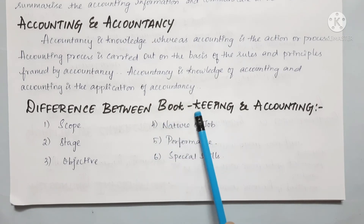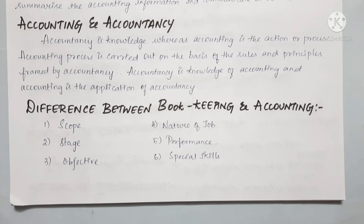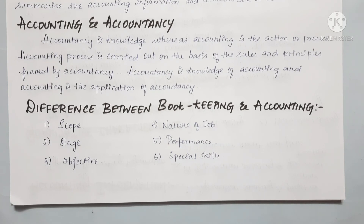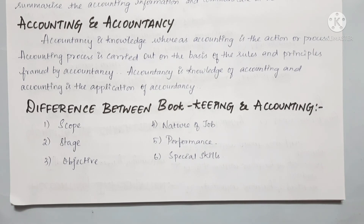For Nature of Job, bookkeeping is routine work, while accounting is analytical. For Performance, bookkeeping is routine work that can be performed by anyone. Accounting requires a special skilled person. For Special Skill, bookkeeping does not require a specially skilled person, but accounting requires a skilled person to carry it out.